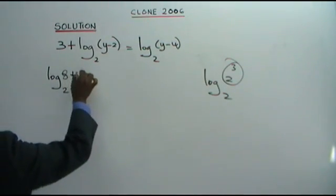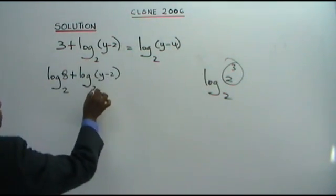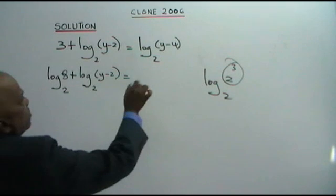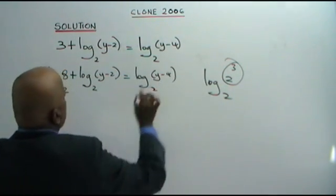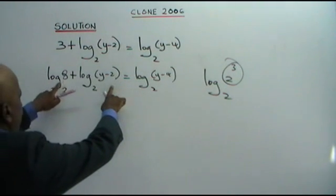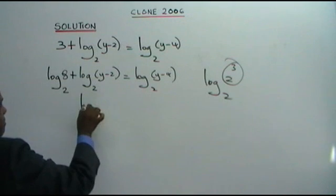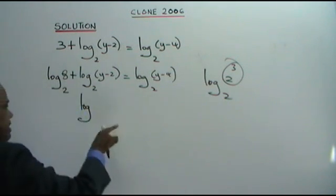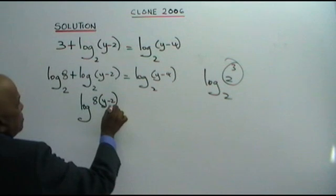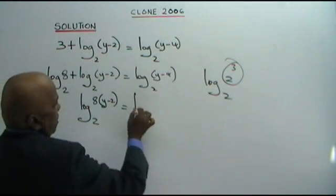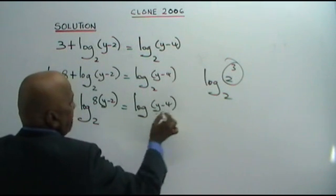So we now have log 8, base 2, plus log(Y minus 2), base 2, equals log(Y minus 4), base 2. We combine these two logs into a single log by multiplying: log 8(Y minus 2), base 2, equals log(Y minus 4), base 2.